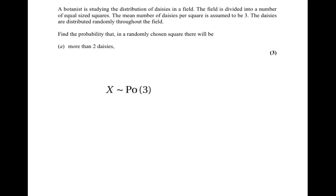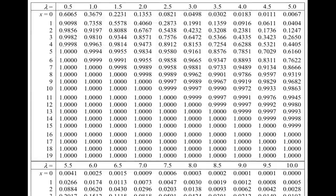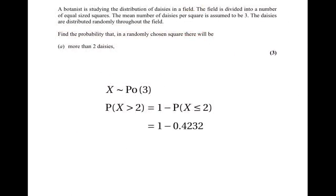We have a random variable with the Poisson distribution because we're talking about a number of events in an interval of space, with parameter 3 since the expected number of daisies in a square is 3. P(X > 2) equals 1 minus P(X ≤ 2). From the tables with lambda equals 3, P(X ≤ 2) = 0.4232, so the answer is 1 minus 0.4232, which is 0.5768 to four decimal places.